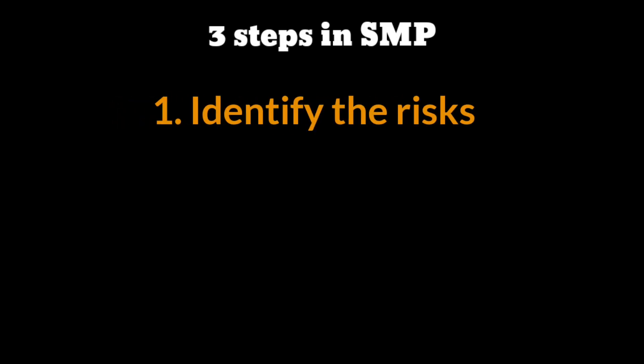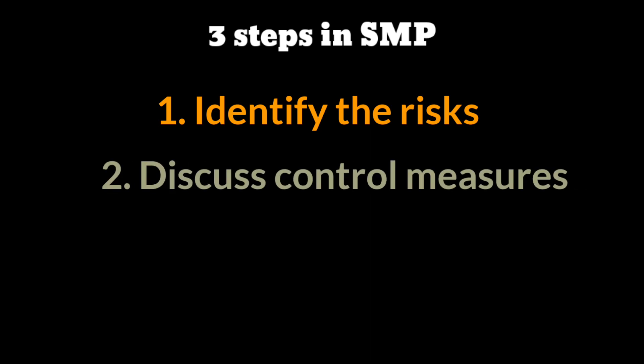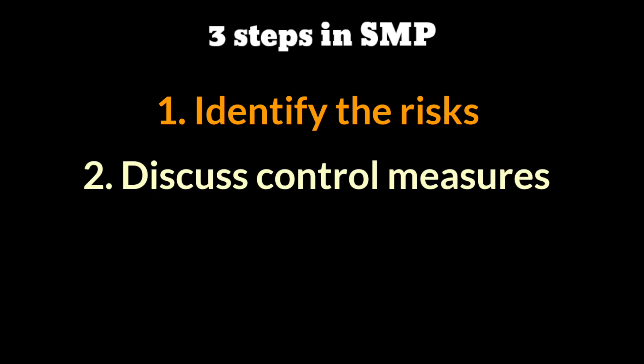The three main steps involved in the safety management plan are: the first step is how to identify what are all the risks associated with our mining operations. The second step is how to discuss among ourselves how to reduce that risk associated with that mining operation.